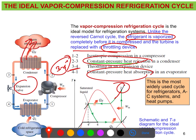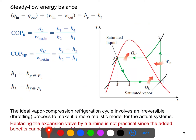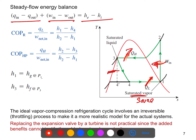All the devices here are steady-state, steady-flow devices, so we can do a steady flow analysis for the whole system. We have heat input from the low temperature source, heat rejection, and work input. For the throttling device — the expansion valve or capillary tube — we don't need any work input or output. So we have heat in, heat out, and work in, and we can do the energy balance using enthalpy differences.